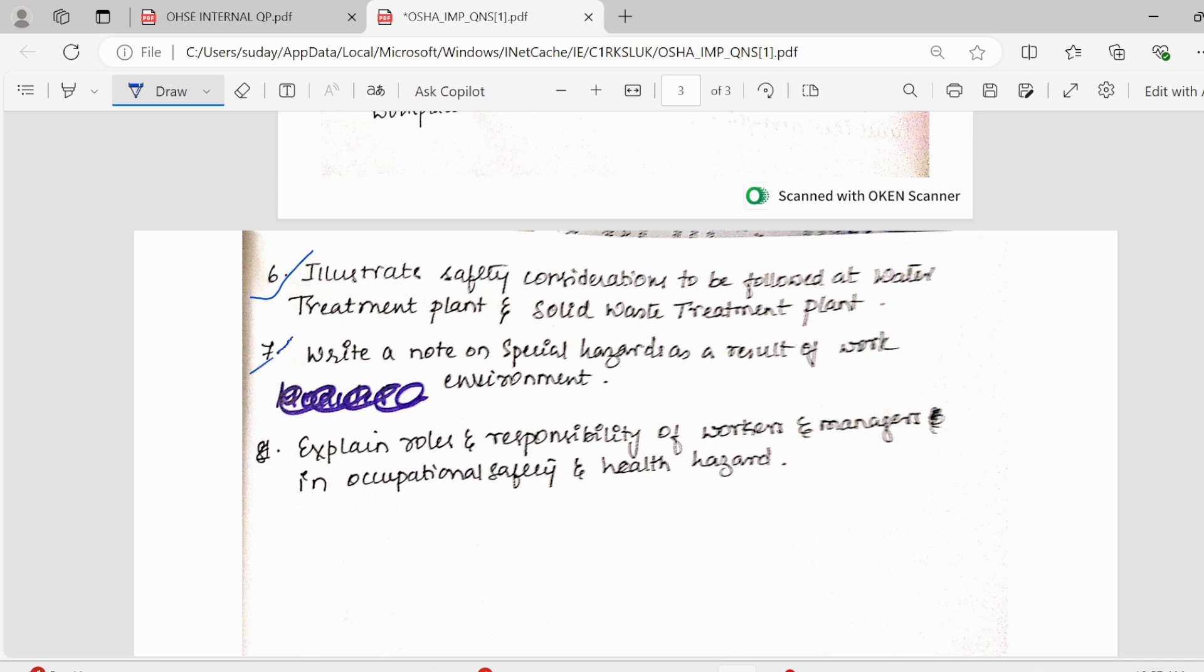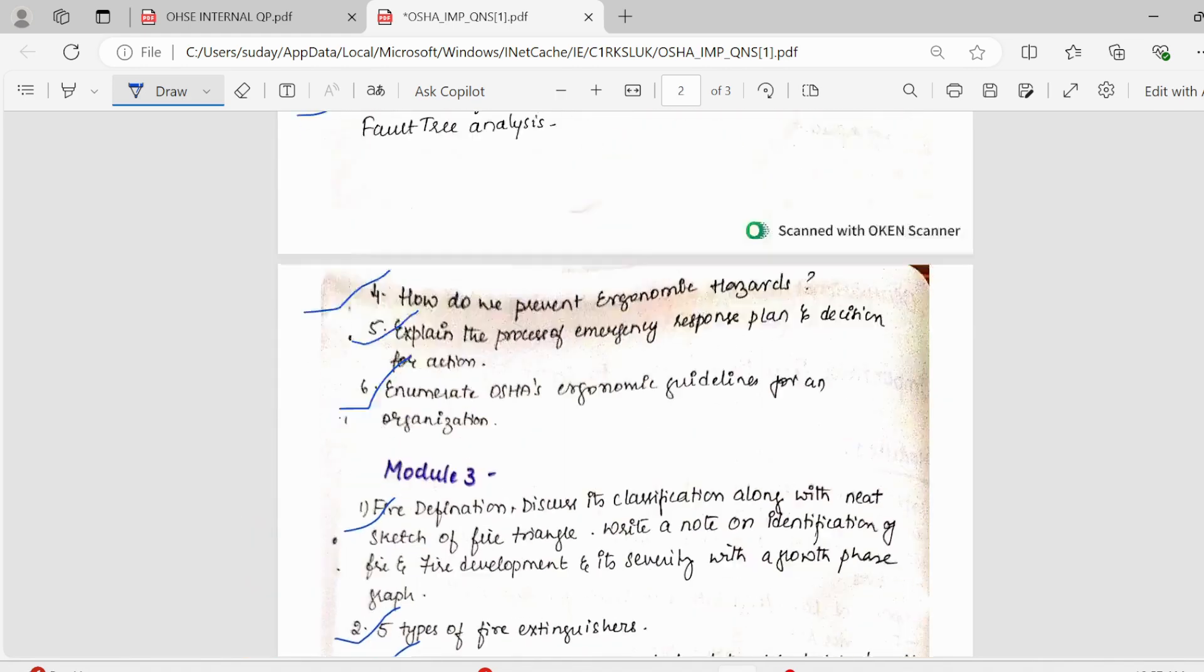Next, seventh question, we have a note on special hazards as a result of work environment. This is also important. Then, we have what is the role and responsibility of workers, managers, supervisors in occupational safety and health hazards? Make sure you cover all these topics properly.